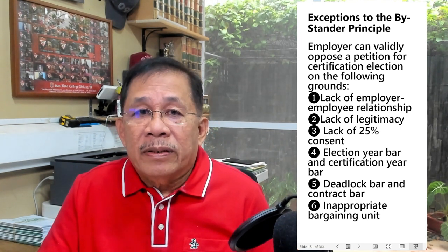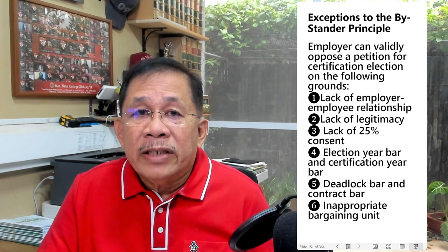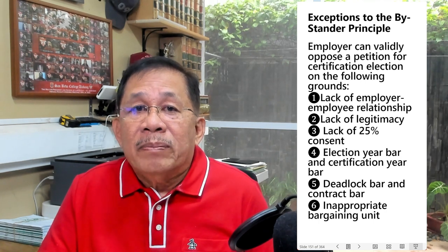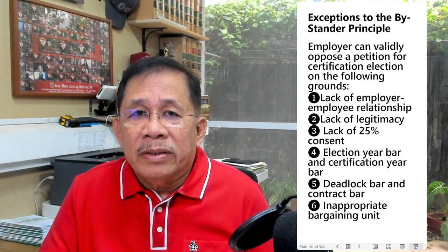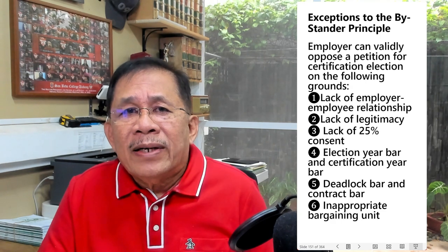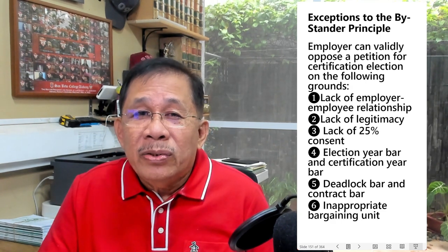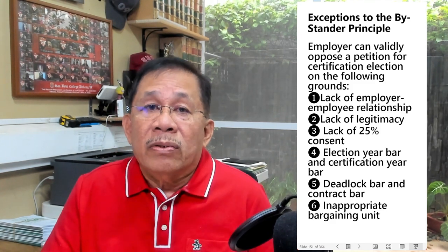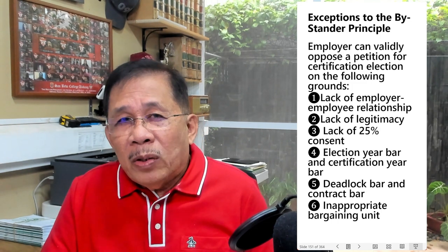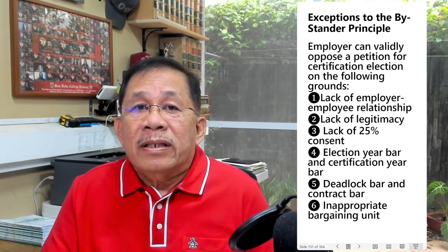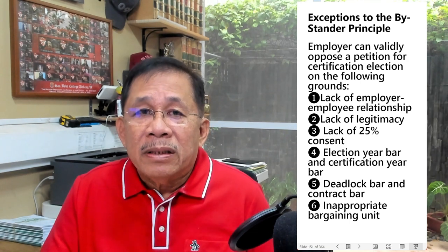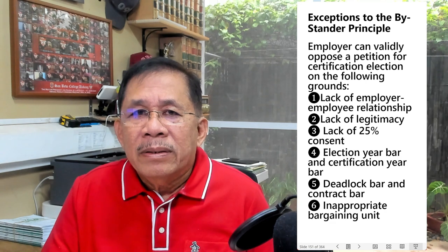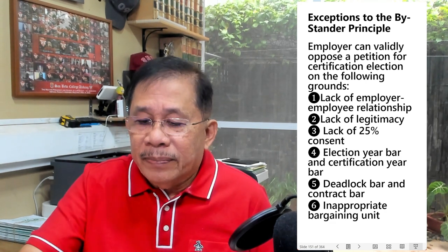An employer can also validly oppose when the petition was filed within one year from a valid certification election or from certification as bargaining agent — the election year bar and certification year bar — so as not to disrupt the bargaining process. An employer can also oppose when there is a duly registered CBA, or when there is a bargaining deadlock submitted to conciliation or arbitration, or subject of a notice of strike or lockout. Additionally, an employer can oppose when the bargaining unit sought to be represented is not an appropriate bargaining unit, since a union representing an inappropriate unit cannot be certified as bargaining agent.